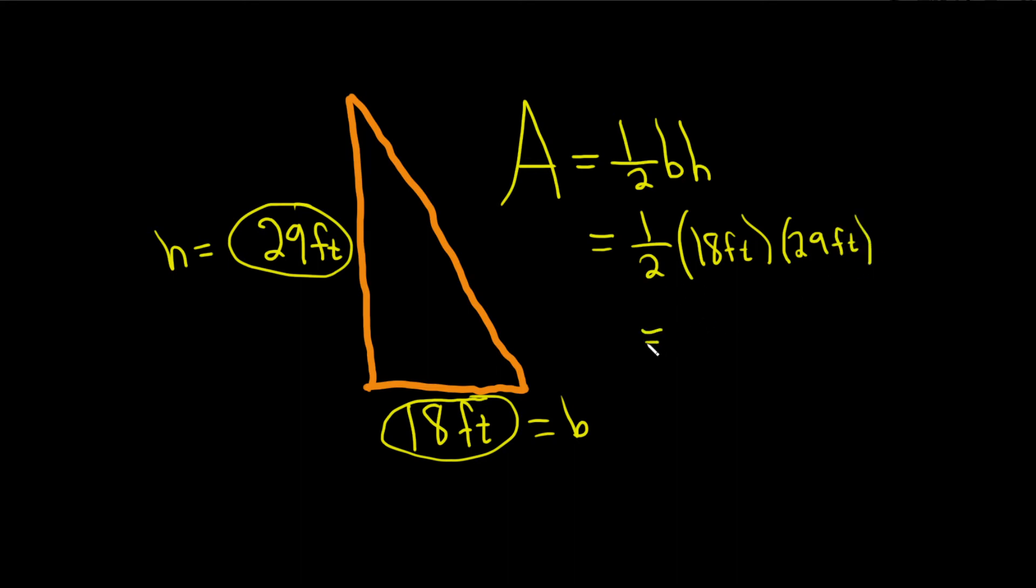Okay, let's use a calculator for this. So I'm going to get my calculator and just multiply 18 times 29. Actually, let me simplify it first. 1/2 goes into 18 nine times, so this is really 9 feet. 9 times 29 feet.